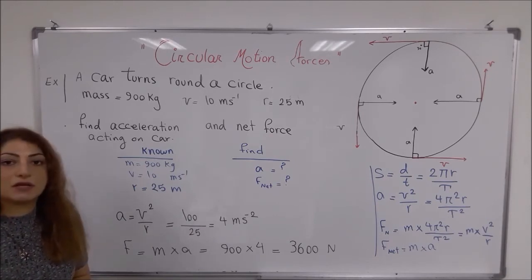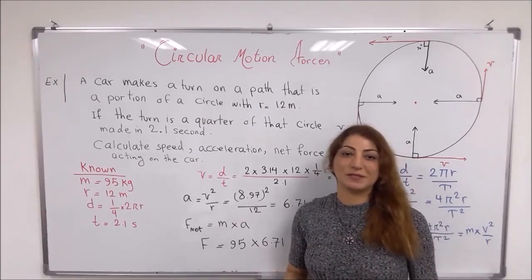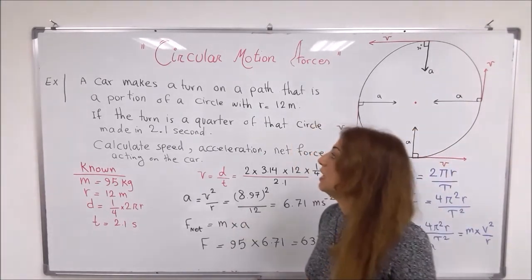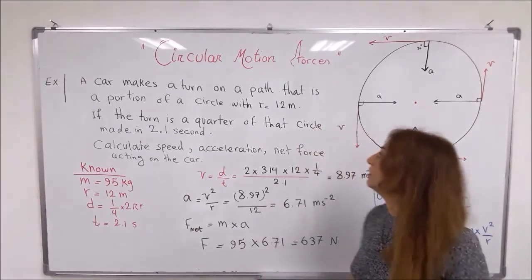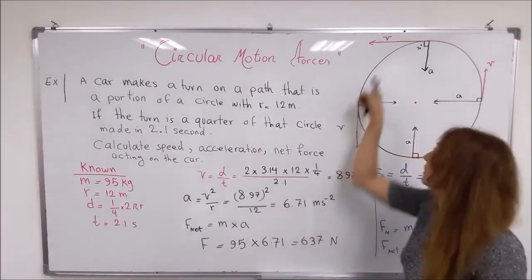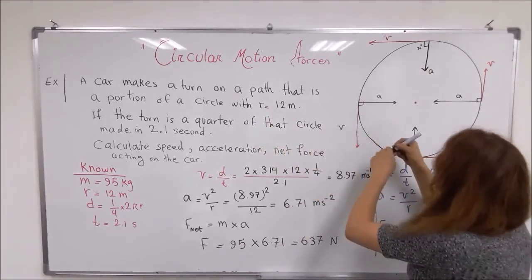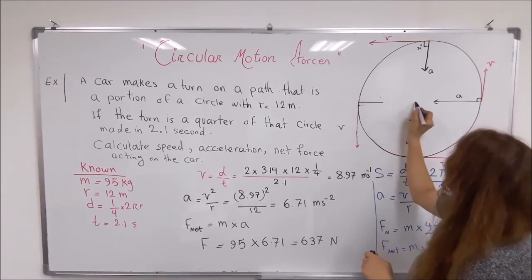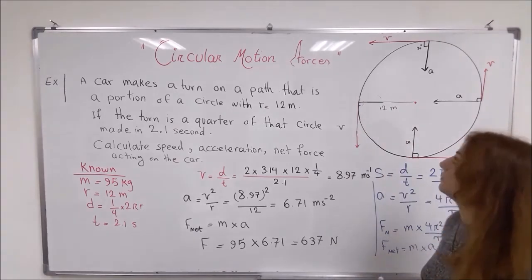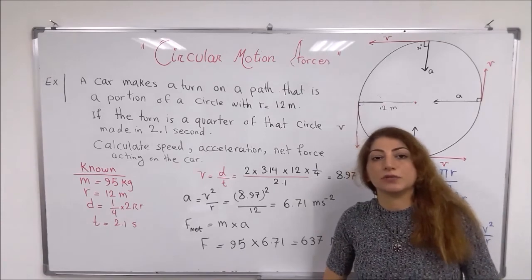Now let's see another example. A car is making a turn around a path which is a portion of a circle. Its radius is 12 meters — from the center to the edge is 12 meters. The radius of the path that the car is moving on is 12 meters.